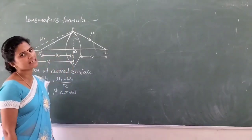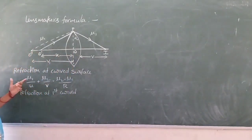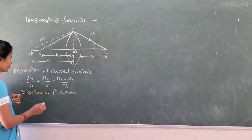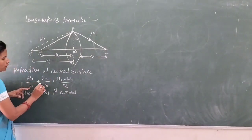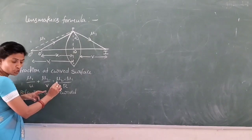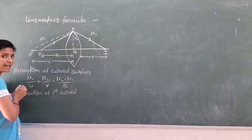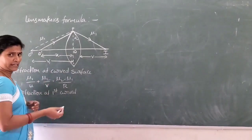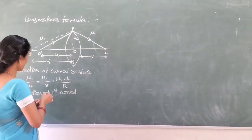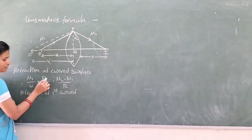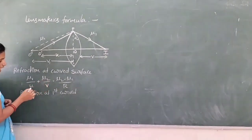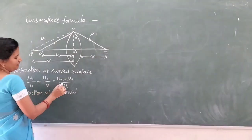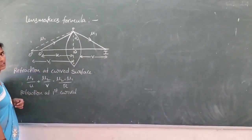The next topic is the Lens Maker's Formula. We already know the refraction at a curved surface formula: μ₁/u + μ₂/v = (μ₂ - μ₁)/R, where μ₁ and μ₂ are the refractive indices, u is the object distance, v is the image distance, and R is the radius of curvature.